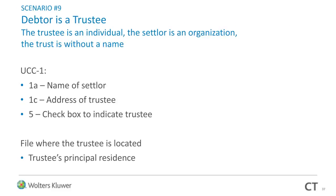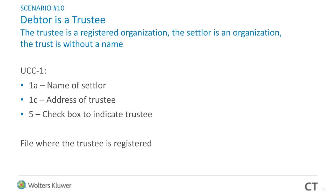Trust scenario nine: the debtor is a trustee, the trustee is an individual, the settlor is an organization, and the trust is without a name. On box 1A, name of settlor. On 1C, address of trustee. Check the box. Trust scenario ten: the debtor is a trustee, the trustee is a registered organization, the settlor is an organization, and the trust is without a name. On box 1A, name of settlor. On 1C, address of trustee. Check the box.